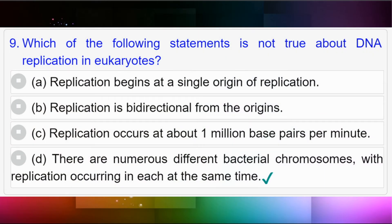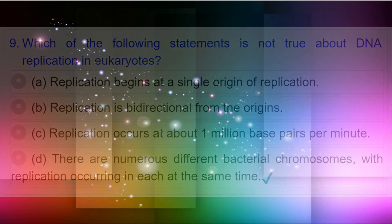Question number nine: Which of the following statements is not true about DNA replication in eukaryotes? Option A: replication begins at a single origin of replication; option B: replication is bi-directional from the origins; option C: replication occurs at about 1 million base pairs per minute; option D: there are numerous different bacterial chromosomes with replication occurring in each at the same time. Answer to question number nine is option D: there are numerous different bacterial chromosomes with replication occurring in each at the same time.